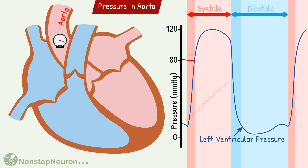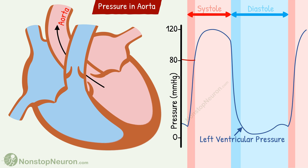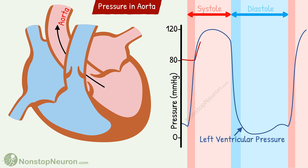At the end of the isovolumetric contraction, the aortic valves open and ventricles push blood over into the aorta. So pressure in the aorta rises. With continued ejection, the pressure in the aorta gets even higher than that in the ventricle. The curve for the aorta has crossed and gone above the curve for the ventricle.